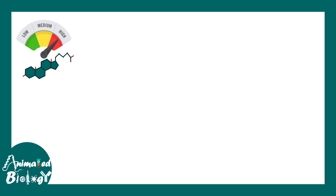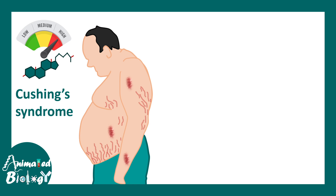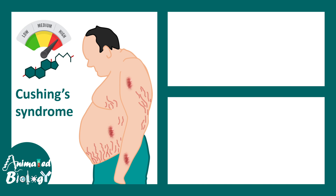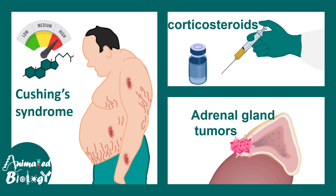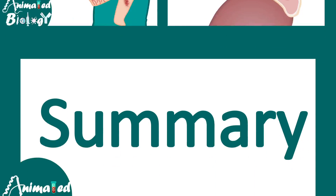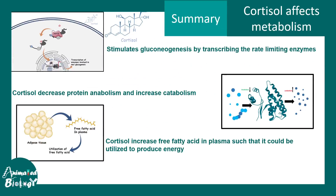It's important to maintain very stringent levels of cortisol in the blood because excessive cortisol leads to Cushing syndrome. Low levels of cortisol are also harmful. Some people take corticosteroids during surgery, which might increase cortisol levels. Additionally, adrenal gland tumors can lead to overproduction of glucocorticoids. In summary, we looked at how cortisol alters metabolism across protein, carbohydrate, and fat metabolism.